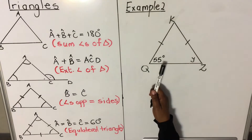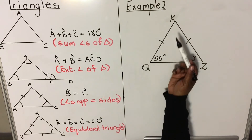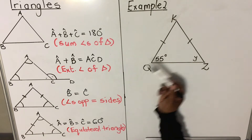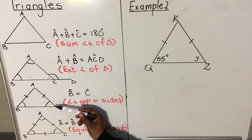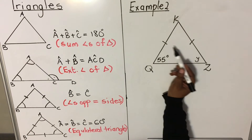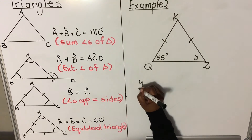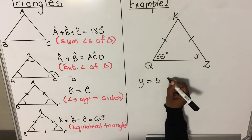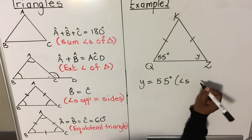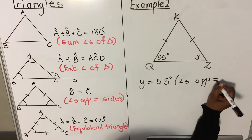Example two involves a special triangle. Triangle KQZ is an isosceles triangle — remember, that's where two sides are equal. When the sides are equal, the base angles are equal. So y equals 55 degrees, and the reason is: angles opposite equal sides.